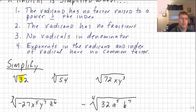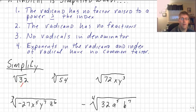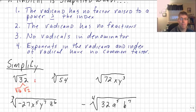Let's begin with the square root of 32. When simplifying square roots, we look for the highest perfect square factor. We could do 8 times 4, but the highest perfect square factor of 32 is 16. So the square root of 32 factors into the square root of 16 times the square root of 2. The square root of 16 is 4, and radical 2 is already simplified, so our final answer is 4 radical 2.